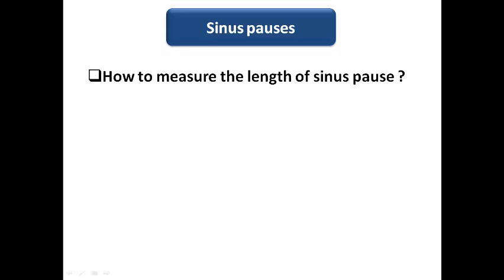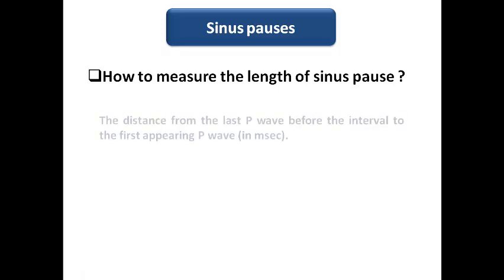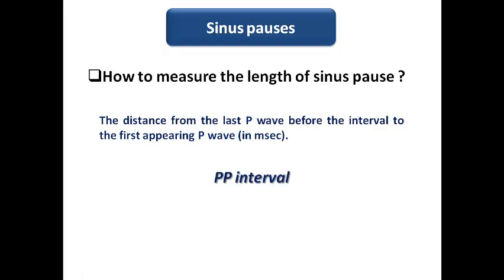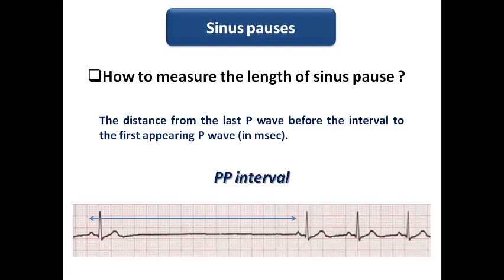To accurately measure the length of the sinus pause, the distance is from the last P wave before the interval to the first appearing P wave afterward, measured in seconds — this is the PP interval. So for example here, I measure from the preceding P wave to the first appearing P wave, giving the whole duration of the sinus pause.